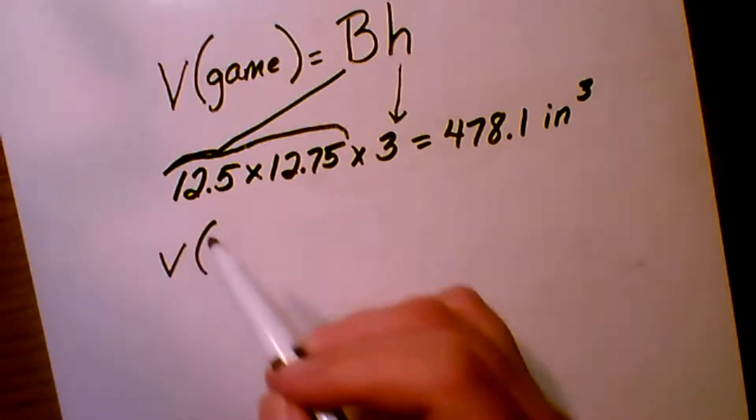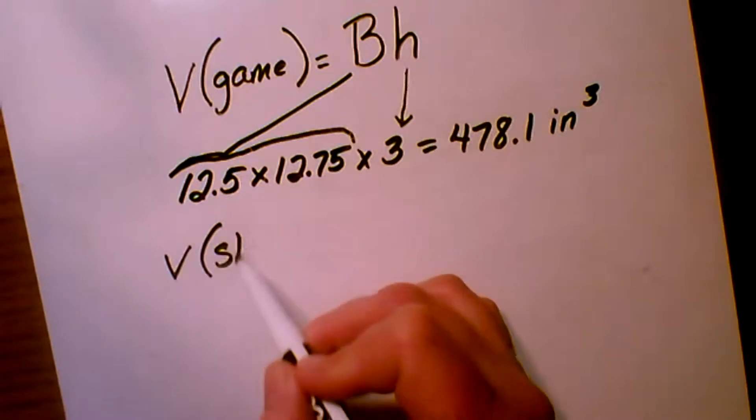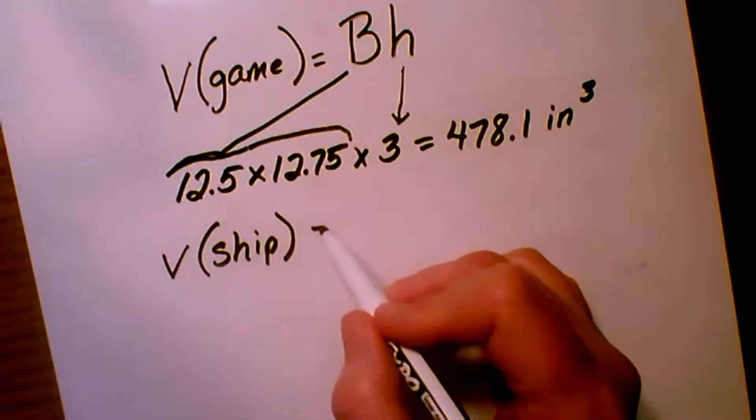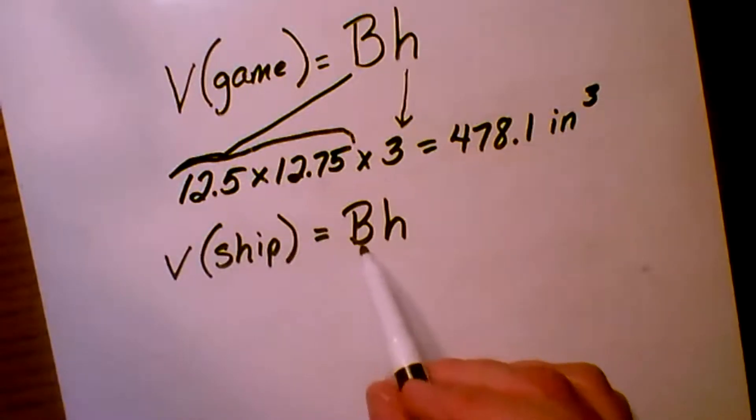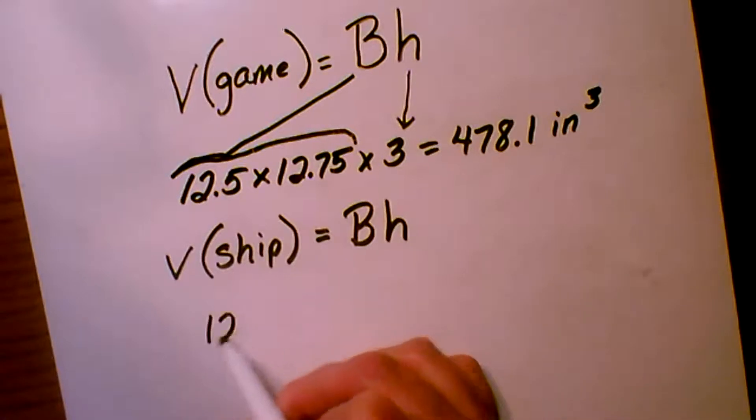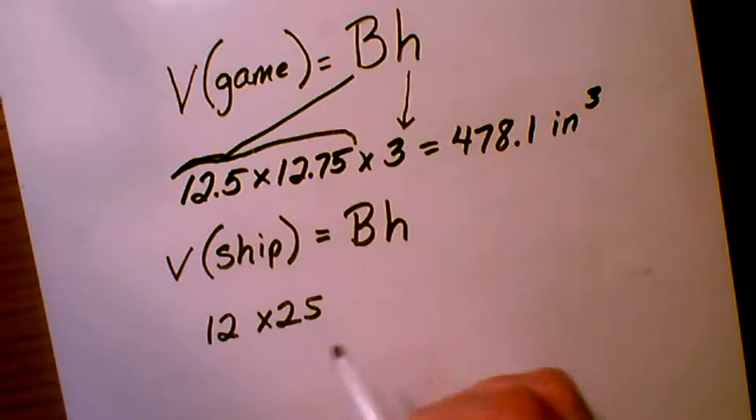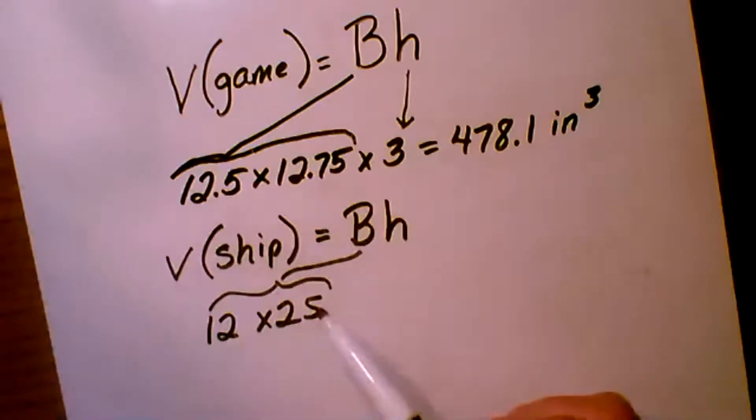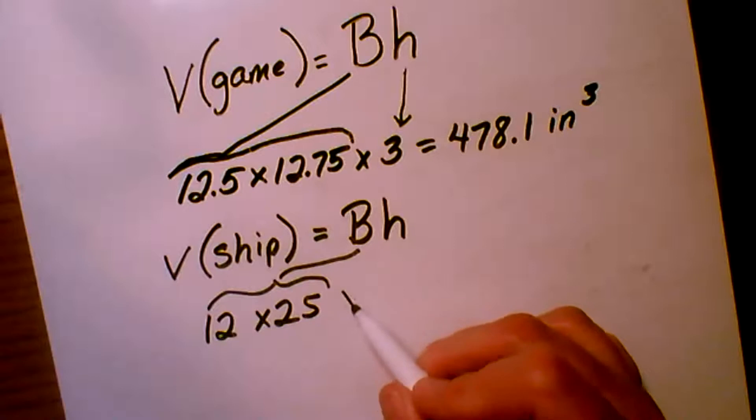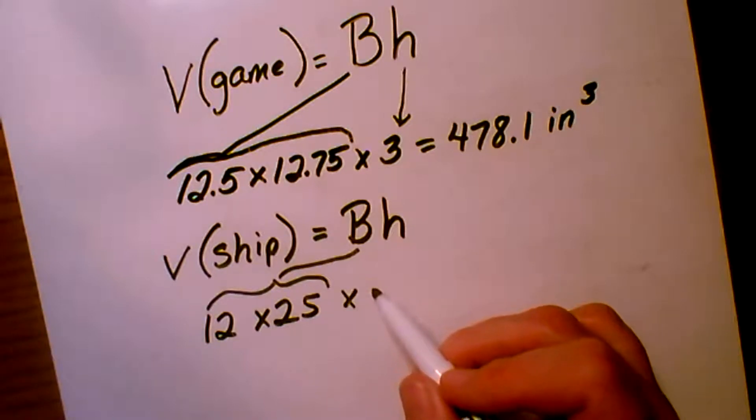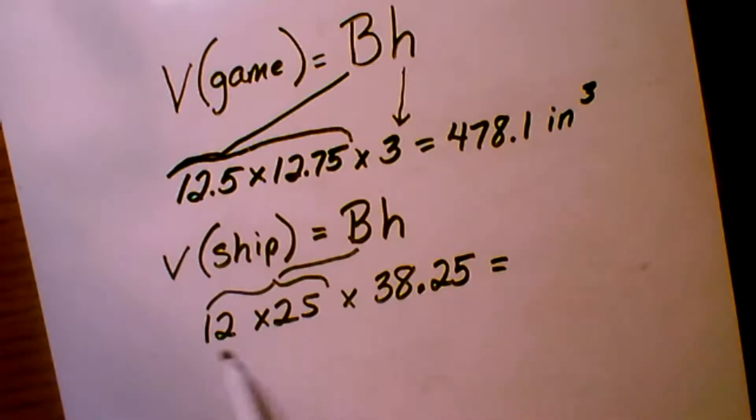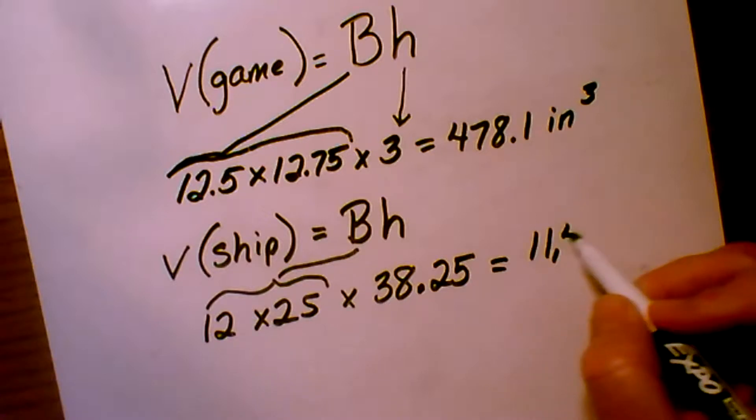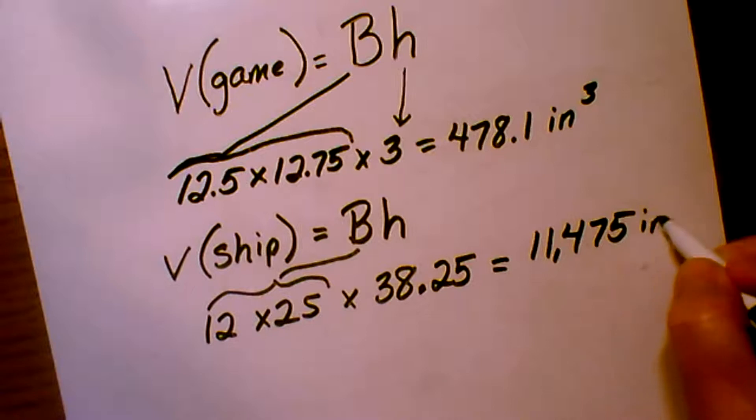The next step is to find the volume of the shipping boxes. That formula is also capital B times H. And in that case, the base measures 12 inches by 25 inches. So I'm just going to go like this—you don't have to do this when you're writing your equation out at all, I'm just doing it so that you can see the connection. And then the height is 38.25. So when we multiply all three of those numbers together, we get 11,475 inches cubed.